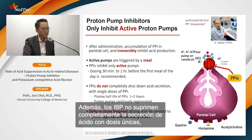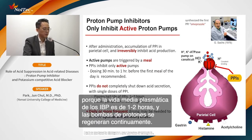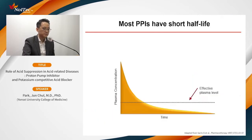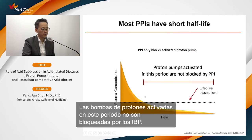PPI does not completely shut down acid secretion with a single dose, because the plasma half-life is only one to two hours and proton pumps continuously regenerate. Daily or more frequent dosing may be needed to achieve optimal anti-secretory effect. PPI only blocks activated proton pumps, so pumps not yet active are not blocked.